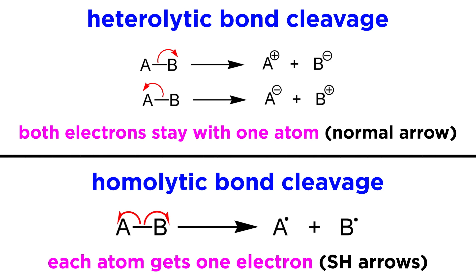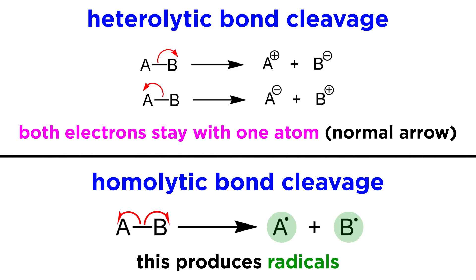One will go from the bond to one atom, and another will go from the bond to the other atom. This results in two radicals, which are species with unpaired electrons, which we will talk about later.